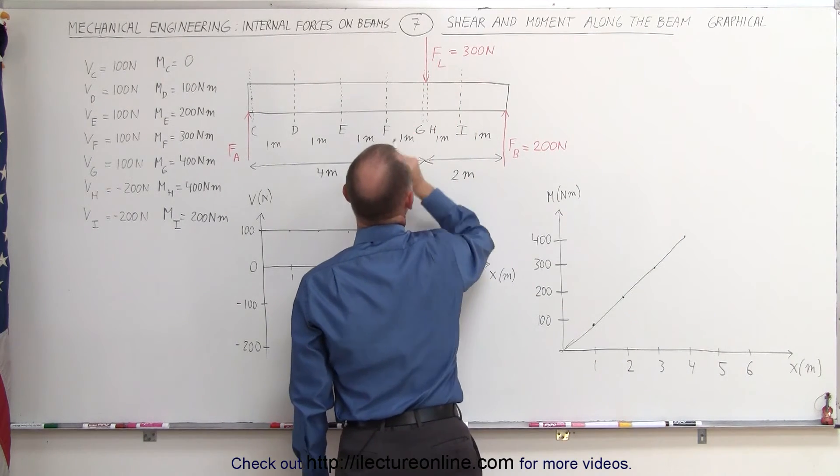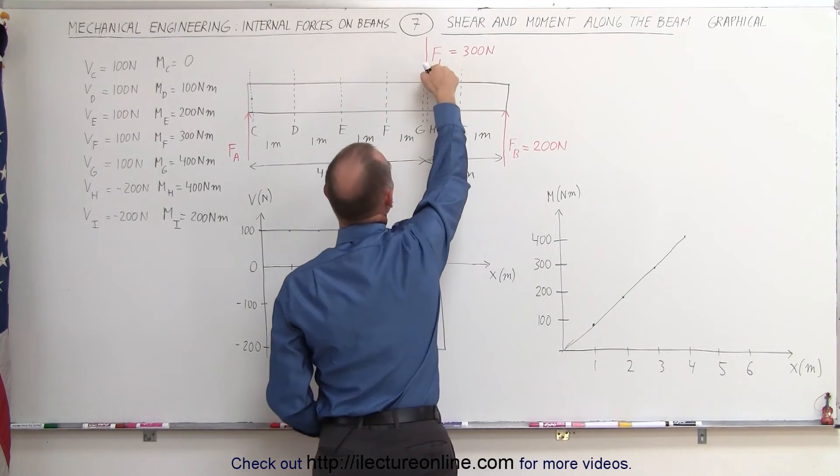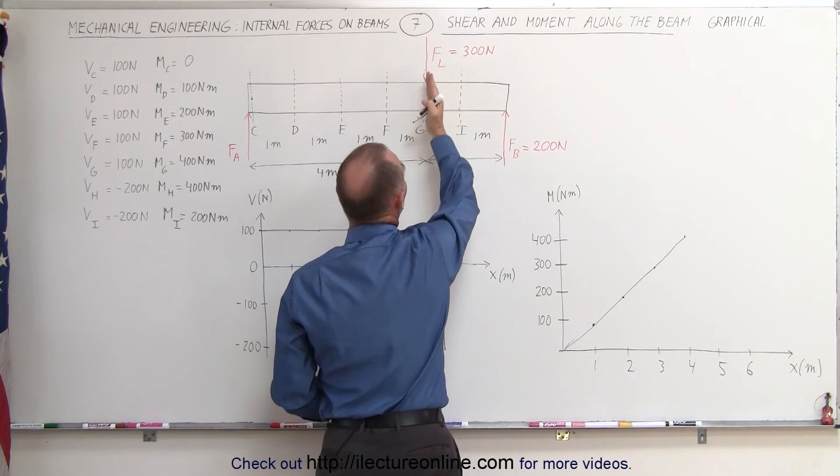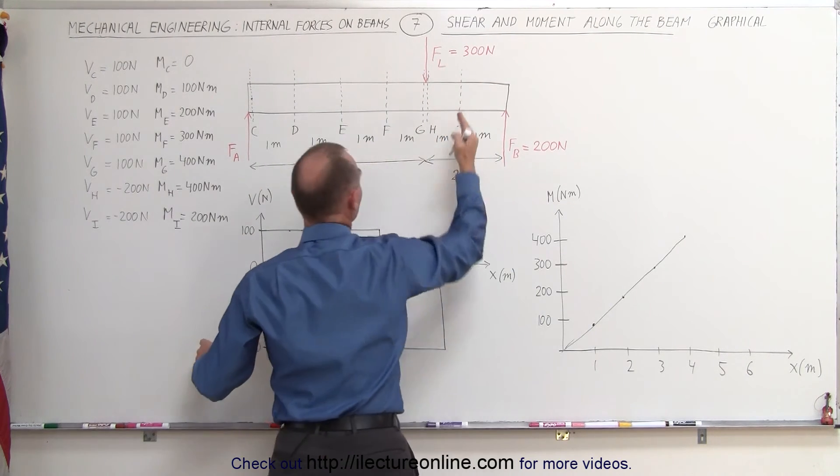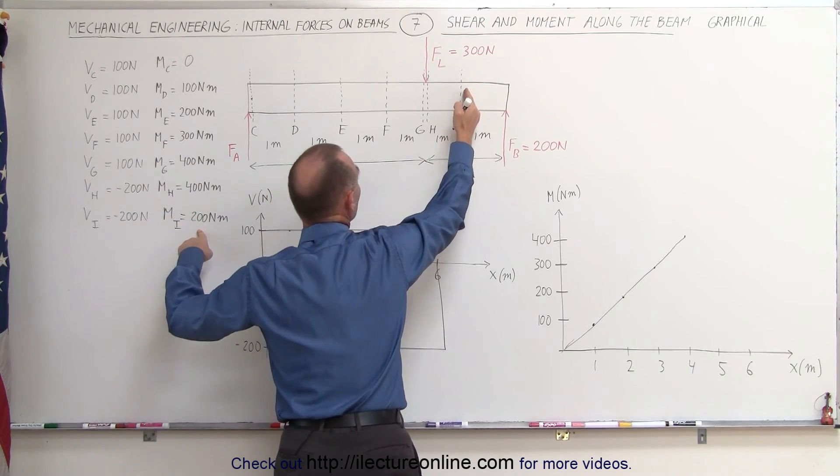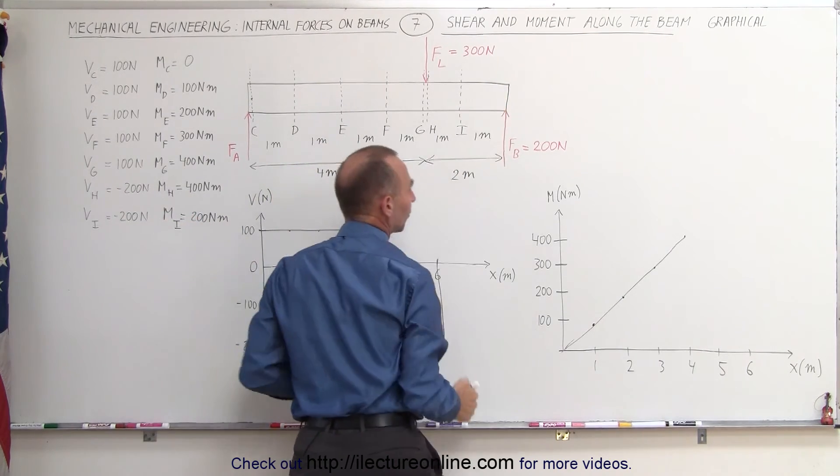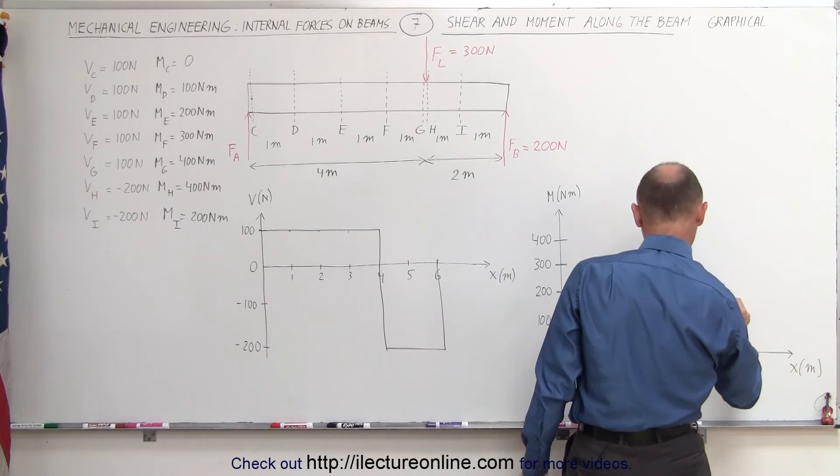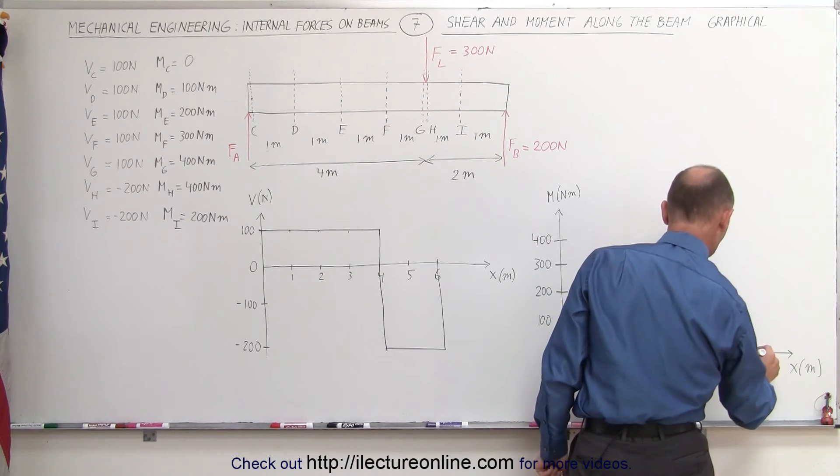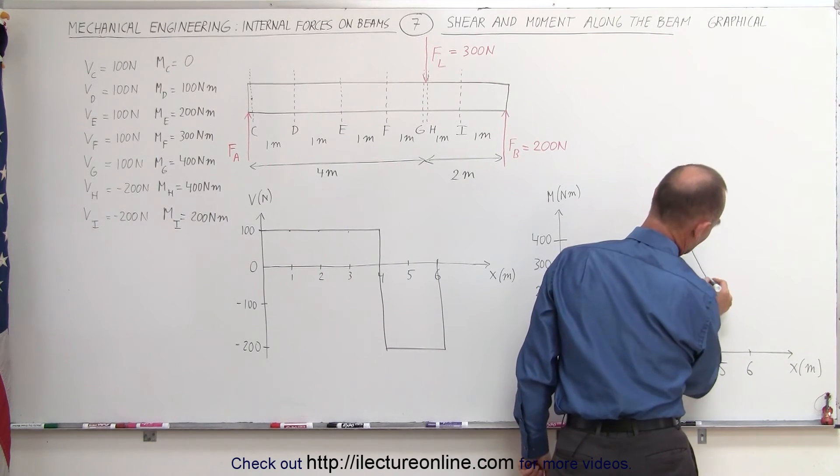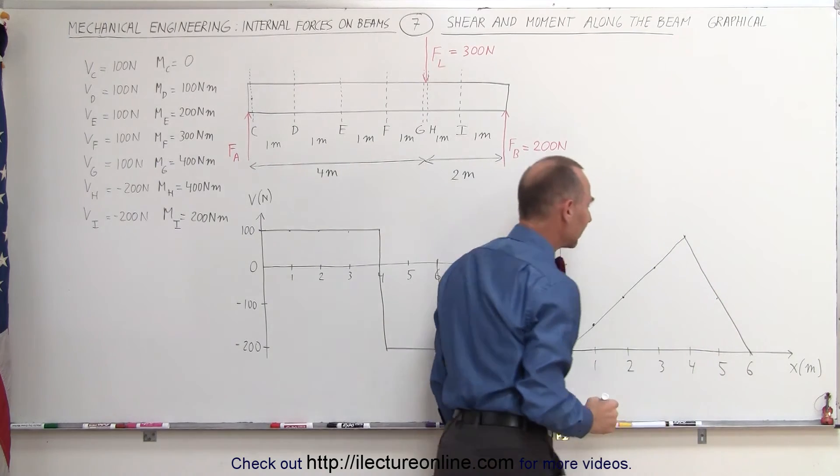Once we get past the load, then you can see that the load begins to counterbalance that moment, and the moment begins to decrease. By the time we get to I, the moment is down to 200 newtons per meter. We get to the very end of the beam, it's down to zero. So at five meters, we get down to 200, and at six meters, back to zero. So the moment then decreases like that.